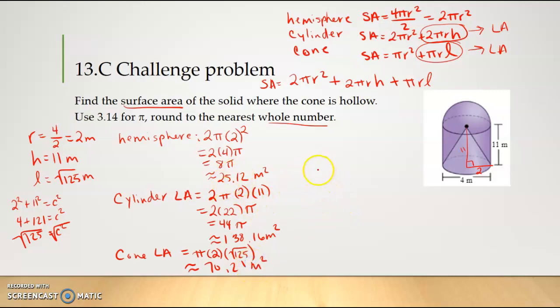And then I'm going to take these three and I'm going to add them together like we talked about up here because our surface area is added together. So we're going to do 25.12 + 138.16 + 70.21, and I add them all together in my handy dandy calculator and we get 233.49 meters squared.